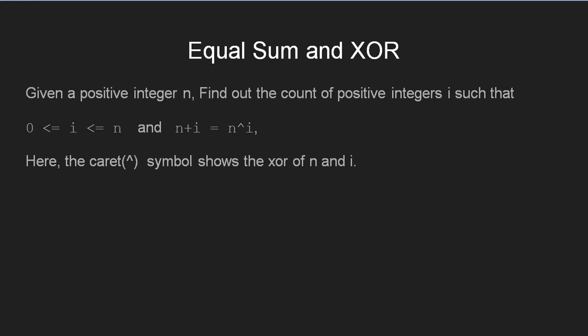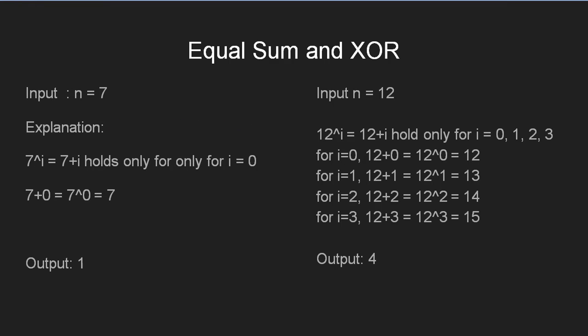Let's understand the given problem with the help of an example. As an example, take the input as 7. Now if we go on analyzing, we find that only 0 satisfies the given equation. That is 7 plus 0 equals 7 caret 0. Since we find only one integer satisfying the given criteria, the output is 1.